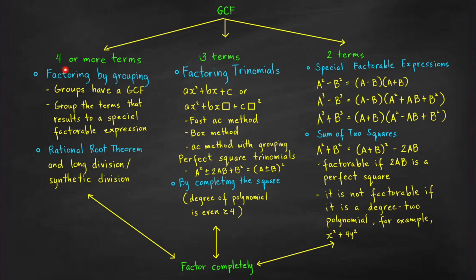If you see four or more terms, then the most famous way to factor it out is using factoring by grouping. But a suitable grouping is very important in this case. You have to group the terms in such a way that the groups will produce a greatest common factor, or so that the resulting expression will be a special factorable expression.